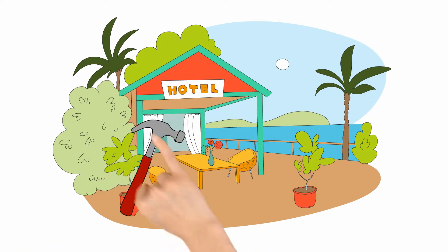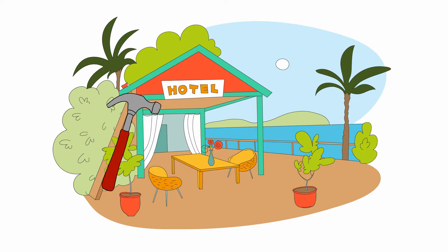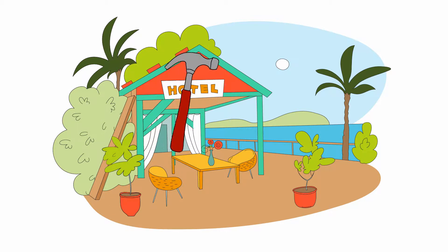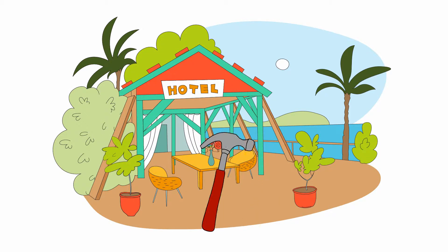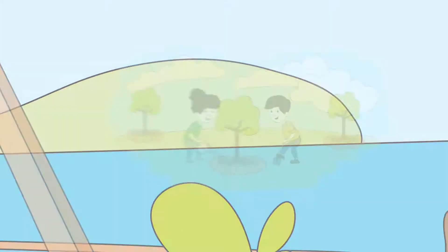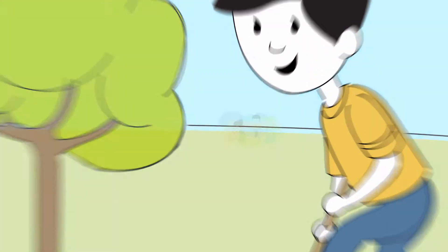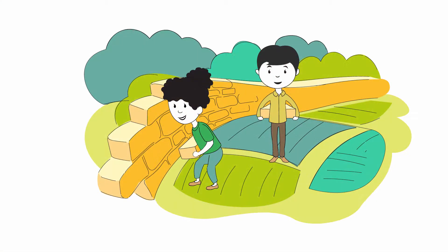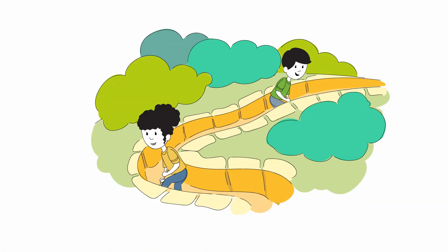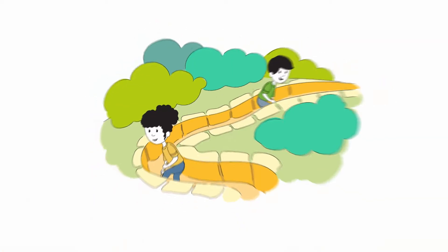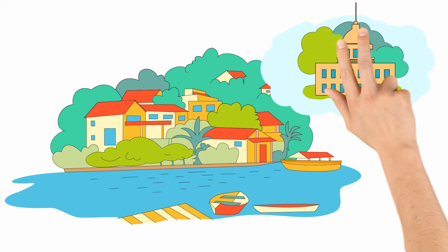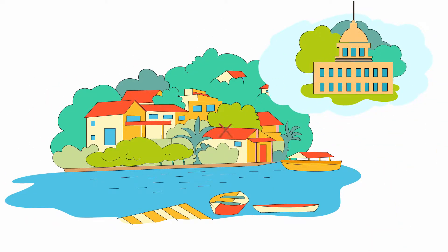In this area of prevention, Mia can strengthen her hotel and home with stronger materials to make them more resistant to wind. Her community can work together to plant trees, build a wall to protect farmland and infrastructure from heavy rain, or clean drainage systems to prevent flooding. The government can implement and enforce land use restrictions to ensure that people don't build in flood-prone areas.